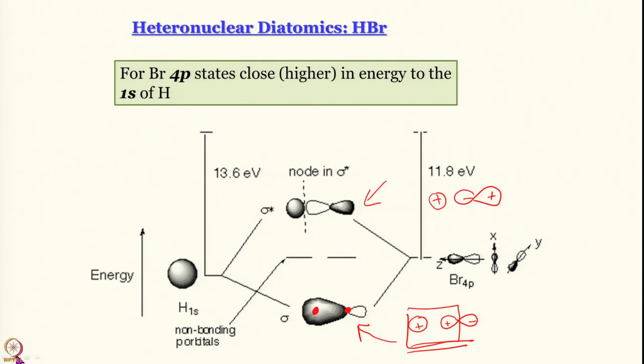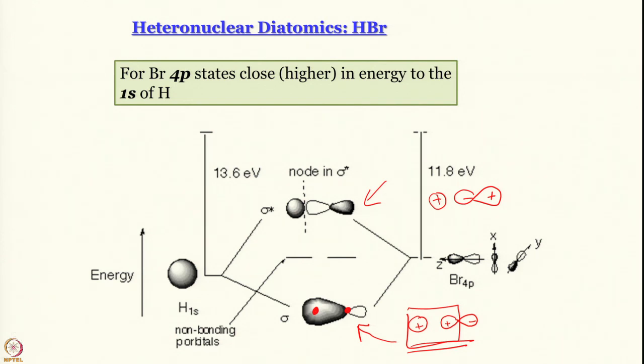From molecular orbital theory of heteronuclear diatomics, we get lopsided molecular orbitals and consequently lopsided electron distribution.